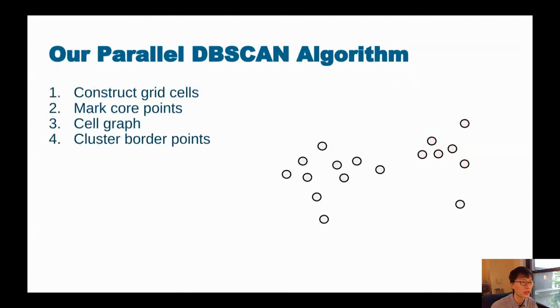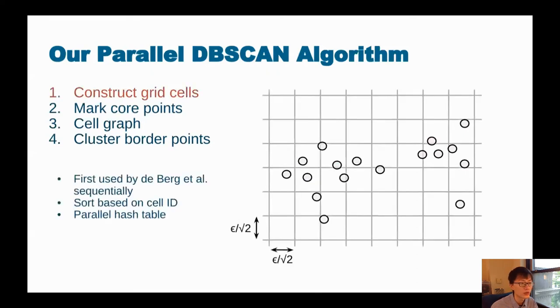And on the other hand, our efficient parallel DBSCAN algorithm borrows the intuition from existing sequential algorithms. We first construct grid cells on points where the side length of each grid is epsilon over square root of dimension. In two dimensions, this is epsilon over square root of two. So this technique is first used by de Berg et al sequentially. To construct such a grid cell in parallel, we sort all the points based on their cell IDs and then use a parallel hash table to maintain the grid cells.